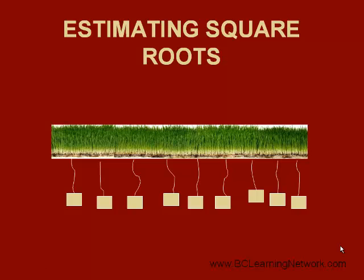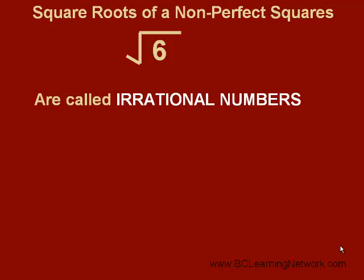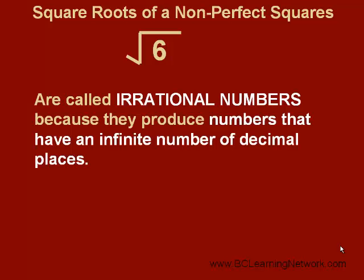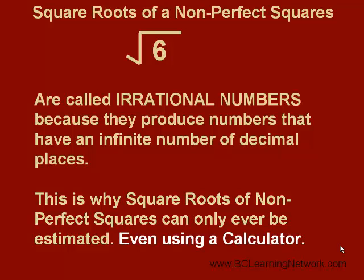This lesson is on estimating square roots. Square roots of non-perfect squares, such as root 6, are called irrational numbers because they produce numbers that have an infinite number of decimal places. That is why square roots of non-perfect squares can only ever be estimated by decimals, even while using a calculator.